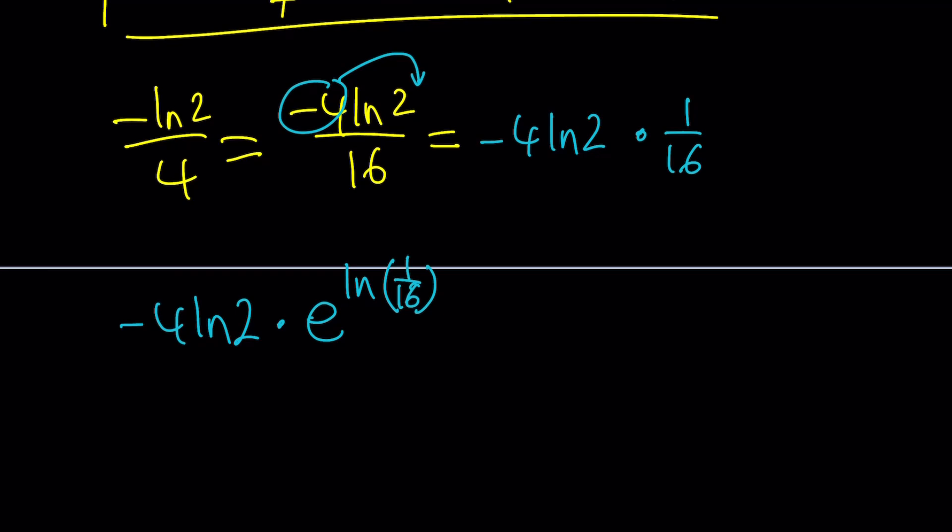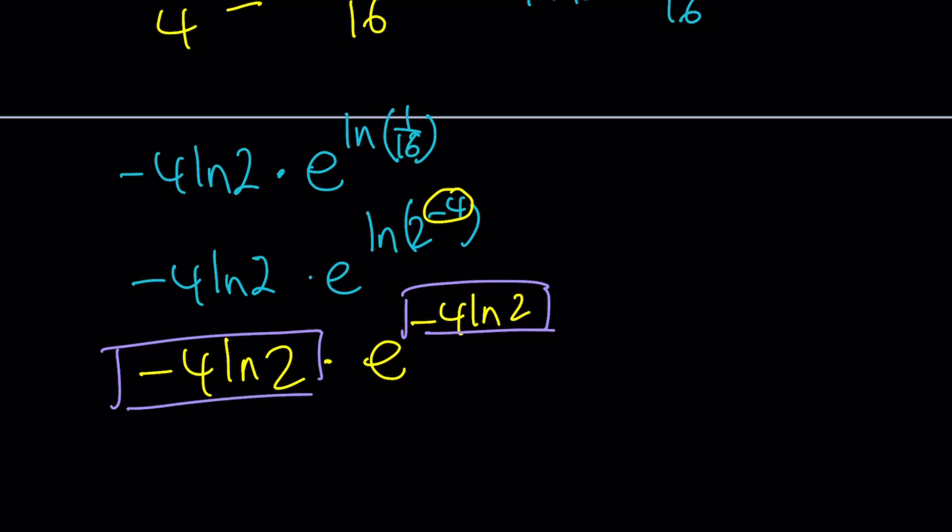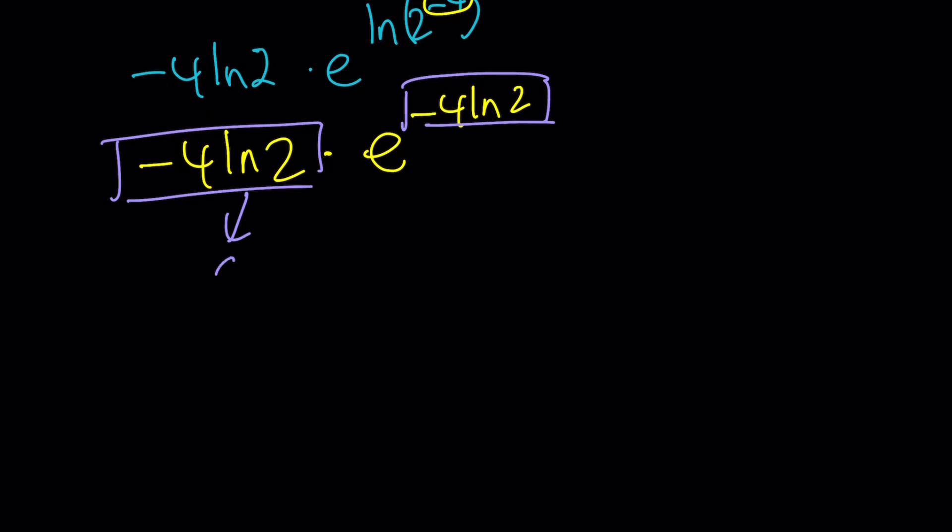What is 1 over 16? That is 2 to the power negative 4. Let's write it that way, and now you can move this negative 4 to the front. This gives us negative 4 ln 2 multiplied by e to the power negative 4 ln 2. Notice that now these two things are the same. Let's call this C for constant, so this becomes C times e to the power C.